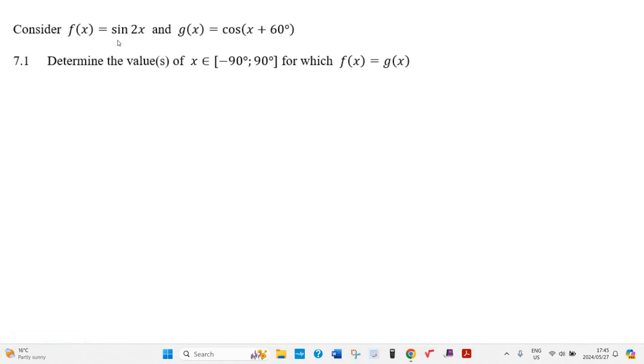Okay, this looks like a general solution question, because we're going to have sine 2x equals cosine of x plus 60.